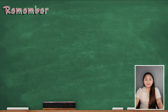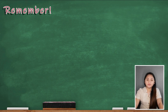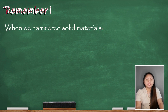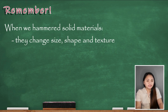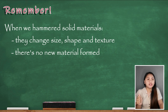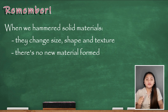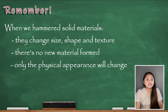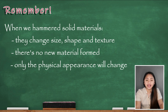Solid materials can also be hammered depending on their composition. When hammered, these materials may change their size, shape, and even their texture. But still, no new material is formed when we hammer solid materials. For example, if we hammer a stone, only its size, shape, and texture will change — it is still a stone, just smaller. Only the physical appearance of the stone changes when we hammer the material.